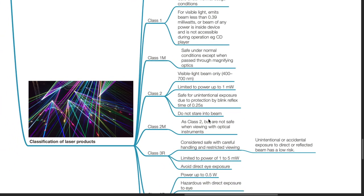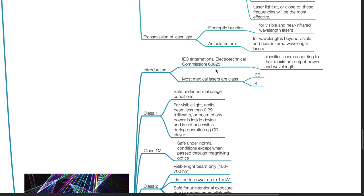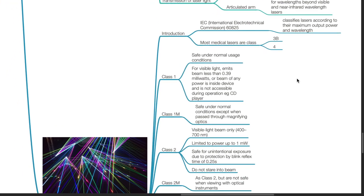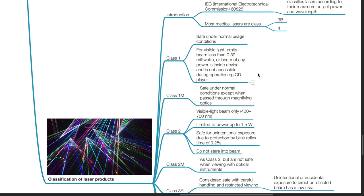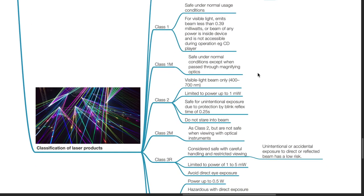Classification of laser products. The International Electrotechnical Commission 60825 classifies lasers according to their maximum output power and wavelength. Most medical lasers are class 3B and 4. Class 1 lasers are safe under normal usage conditions. For visible light, it emits beams less than 0.39 mW or beam of any power is inside device and is not accessible during operation. For example, CD player.